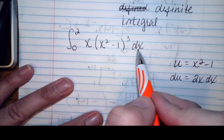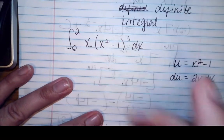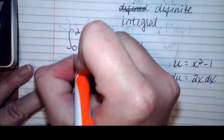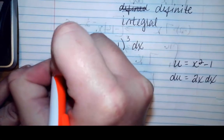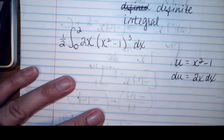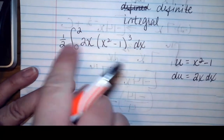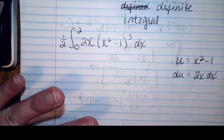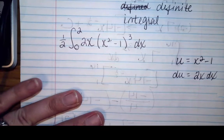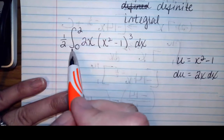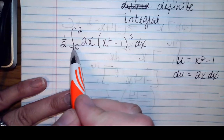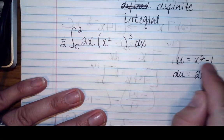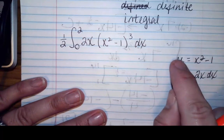So I've got the dx and the x, I need a 2. I'm going to multiply by 2 and then to balance, multiply by one-half, because half of 2 is 1. Hopefully this part is familiar. What we are also going to do is change our limits of integration, because we know how to change from terms of x into terms of u.